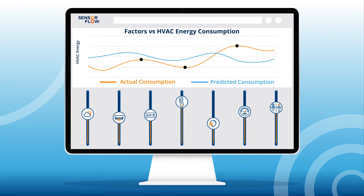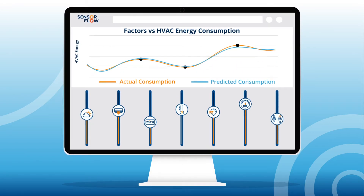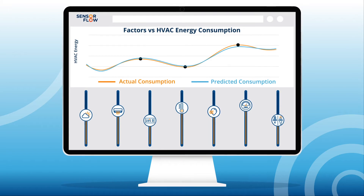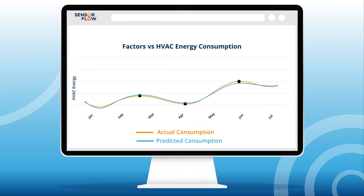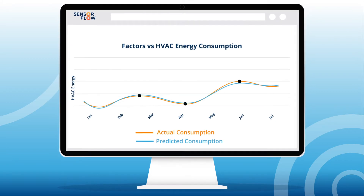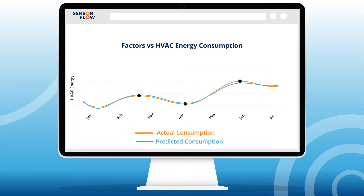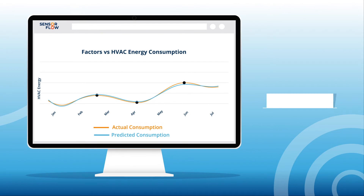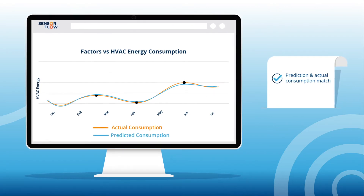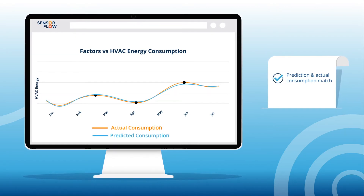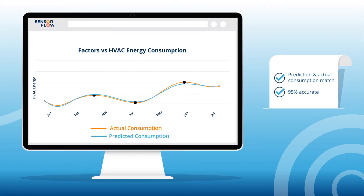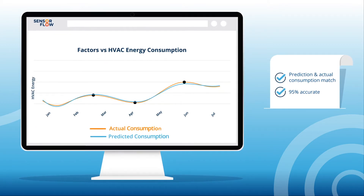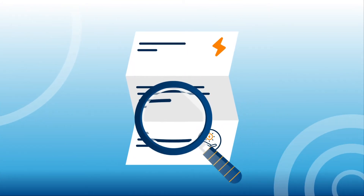Once we've found a model that we think fits, we test the accuracy of our prediction model. We compare the predicted HVAC energy consumption that the model has created against the actual HVAC energy consumption data we've collected. We are only confident in our prediction model if it is able to closely simulate the curves and patterns of the actual HVAC energy consumption with an accuracy level of over 95%.